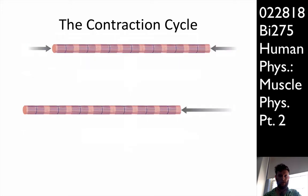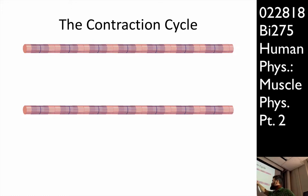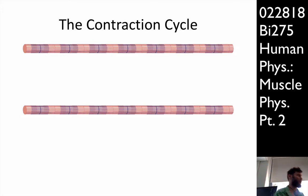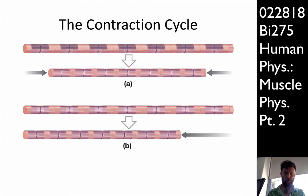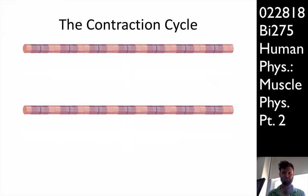The sarcomeres' Z-lines are going to move towards one another, and the sarcomere itself is going to shorten — essentially reducing the area of the I-band. The A-band stays the same size because that's the myosin. The I-band is where it's just the actin, and that gets shorter as the muscle contracts.